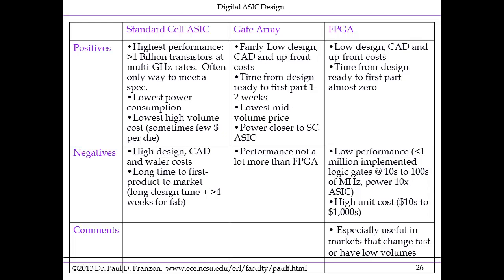One specific advantage of FPGAs is that they're particularly useful in markets that change fast, and obviously in markets with low volumes. Gate arrays are in between. In terms of design cost, they tend towards FPGA — fairly low design costs. In terms of design time, very close to FPGA, and from sending CAD files to the factory to getting parts back might be as little as one week. In terms of cost per unit, they're closer to standard cells, and in terms of power consumption, also closer to standard cells than FPGAs.